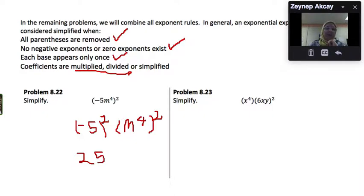And m to the fourth to the second power, we will use the power rule. So multiply 4 and 2 to get m to the eighth. So the result is 25m to the eighth.